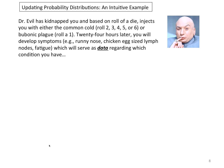Dr. Evil has kidnapped you and, based on the roll of a single die, he injects you with either the common cold — that's if he rolls a 2, 3, 4, 5, or 6 — or the bubonic plague, that's if he rolls a 1. So this is a little bit like Russian Roulette. 24 hours later, you will develop symptoms: it could be a runny nose, or chicken-egg sized lymph nodes, or fatigue, which will serve as data regarding which condition you have.